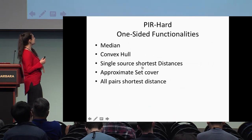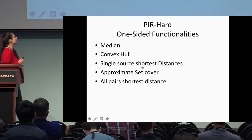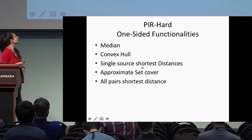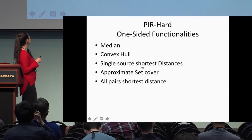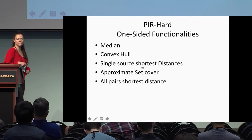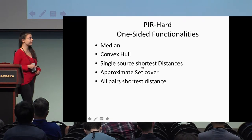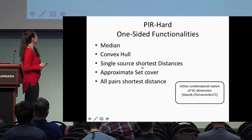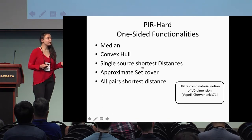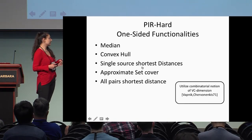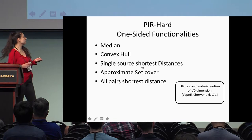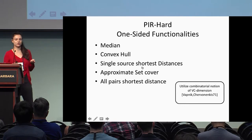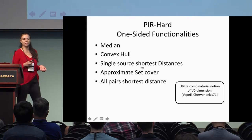These are the PIR-hard problems shown in the paper: the median, the convex hull, and related problems. As a side note, to make this reduction we use a combinatorial tool called the VC dimension, usually used in learning theory.